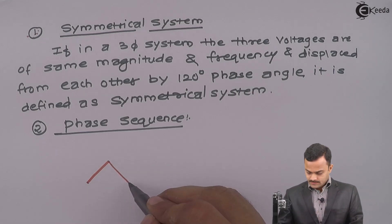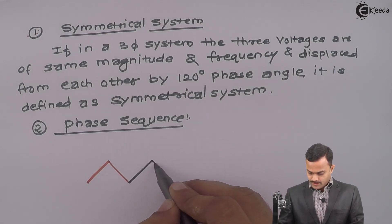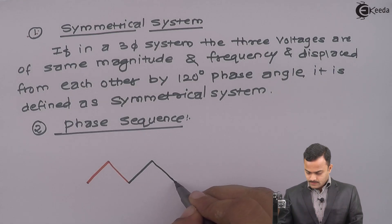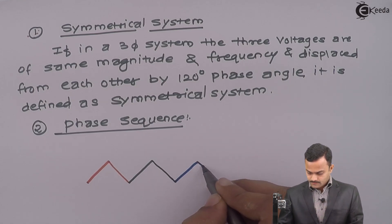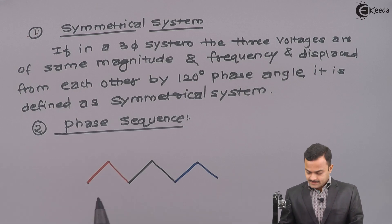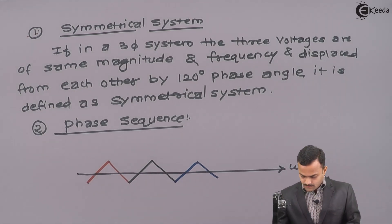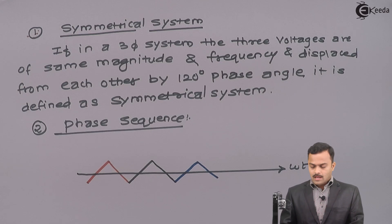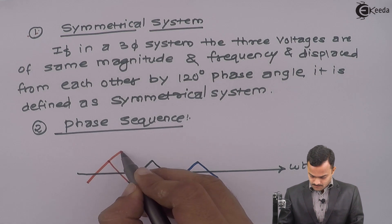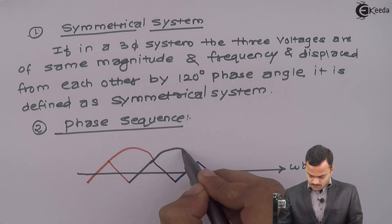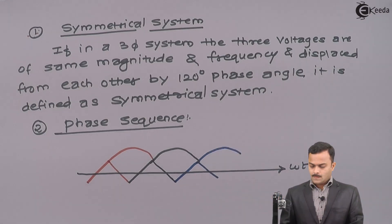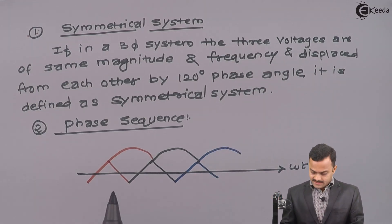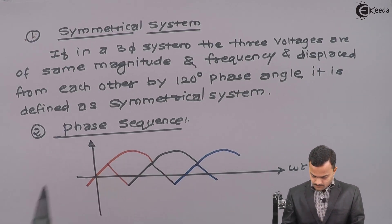Because this is Vr, this will be Vy, and this will be Vb. I will draw X-axis, and now I will connect these ends. And Y-axis, I will draw like this. This is a voltage, and this particular waveform is your Vr.